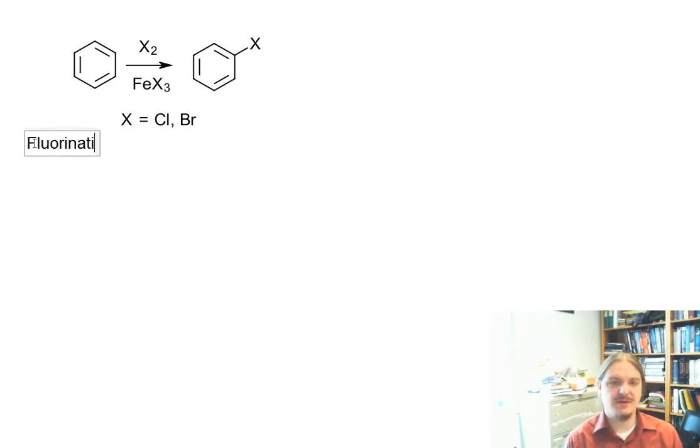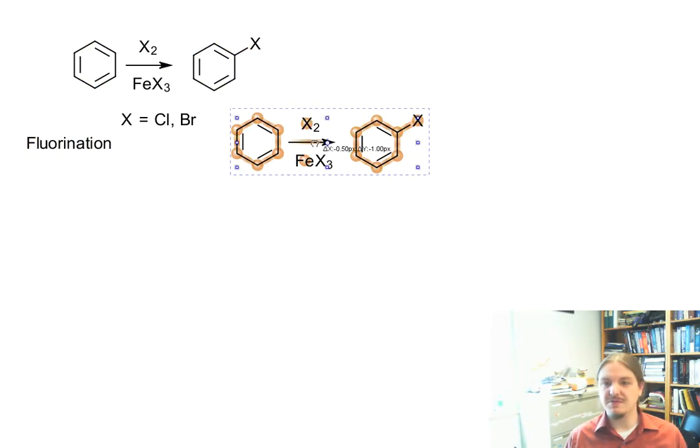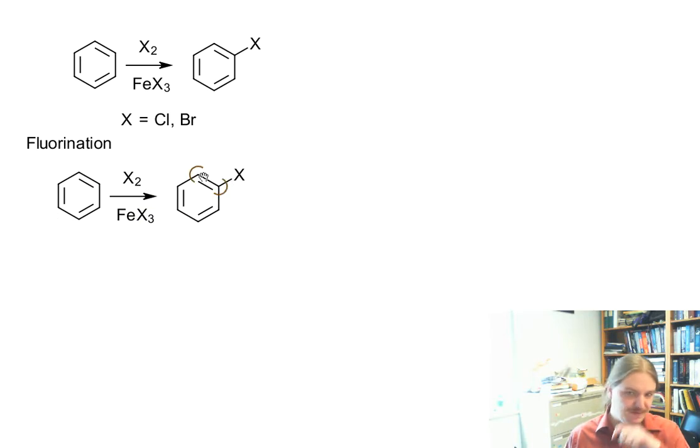So let's then talk about how you might do electrophilic fluorination. In order to do electrophilic fluorination, instead of using fluorine, which is terrifying, we need an electrophilic source of fluorine. It can't be F2.